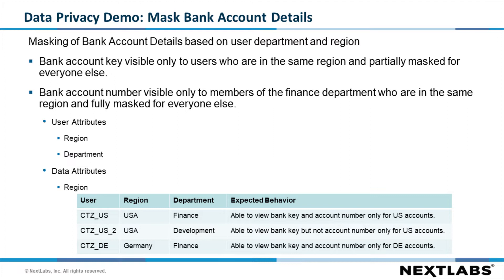We have three users. The first user is based in the United States and is a member of the finance department, and will be able to view both the bank key and the bank account number for all US accounts. The second user is based in the US, but is a member of the development department, so they will only be able to view the bank key, but not the account number for US accounts. The final user is based in Germany, and will have both the bank key and the account number for US accounts masked.